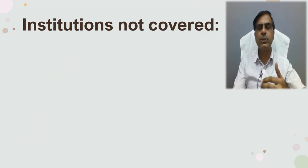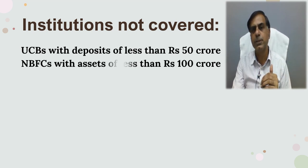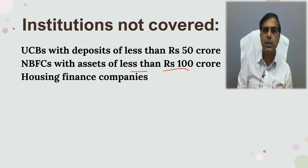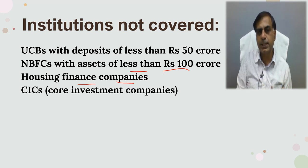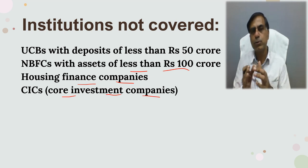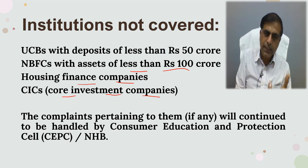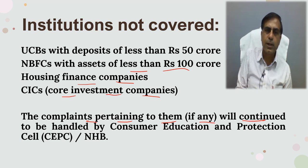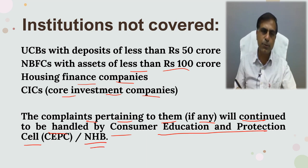Institutions not covered under this scheme include urban cooperative banks with deposits of less than Rs 50 crore, NBFCs with assets of less than Rs 100 crore, housing finance companies, and core investment companies. Complaints pertaining to these institutions will continue to be handled by the Consumer Education and Protection Cell of RBI, or in the case of housing finance companies, by the National Housing Bank.